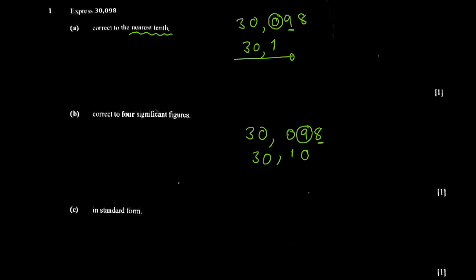One way to check these questions: if they ask you to correct to the nearest tenth, your answer should end at the tenth digit. Similarly, if they ask for four significant figures, your answer must have four significant figures. If it has three, you've done it wrong.